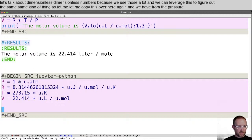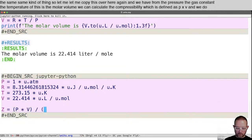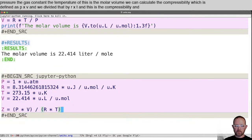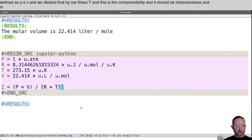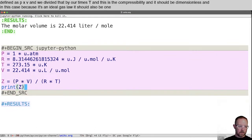We can calculate the compressibility, which is defined as P times V and we divide that by R times T. And this is the compressibility and it should be dimensionless. And in this case, because it's an ideal gas law, it should also be one. So let's have a look. What do we get?